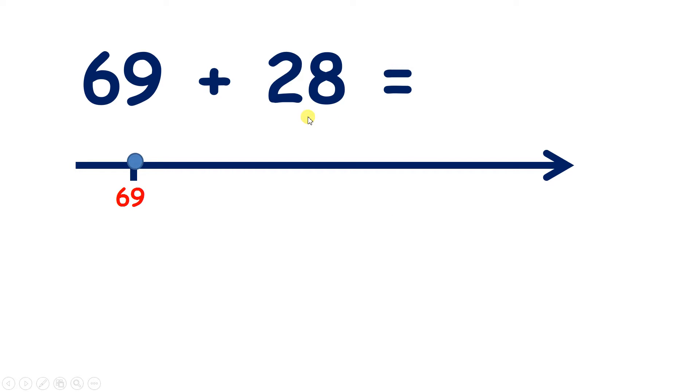So 28 is 2 less than 30, so we can add 30 to 69, to give us 99. And now we take away 2, to give us 97.